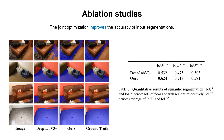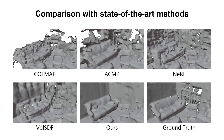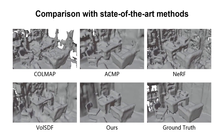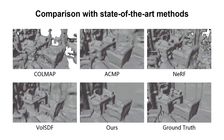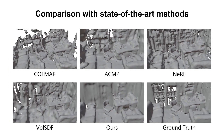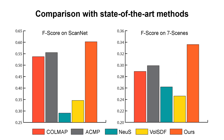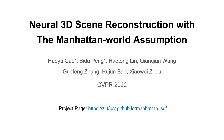The joint optimization also improves the accuracy of input segmentations. As shown in qualitative results, our method reconstructs geometry with better quality compared to state-of-the-art multiview stereo and volume rendering-based methods. The quantitative results also show that our method achieves the best performance. Thanks for watching — welcome to our project page for more information.